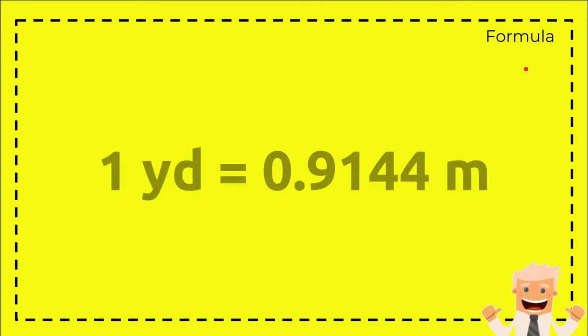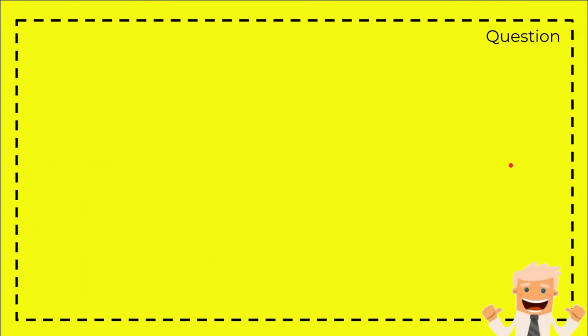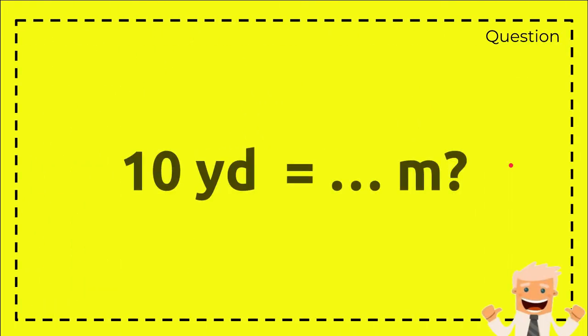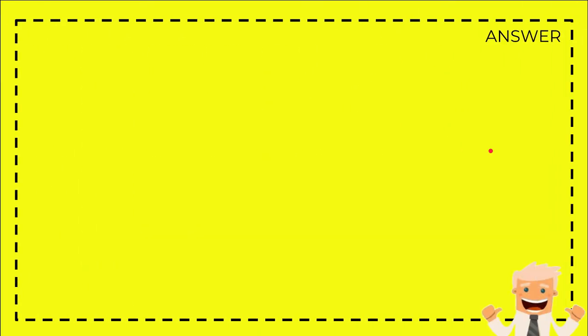So this is the formula: 1 yard equals 0.9144 meters. Let's make an example question. I want to know 10 yards equals how many meters. Let's solve this problem. To answer this question, first you need to write down the question again: 10 yards equals how many meters?